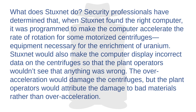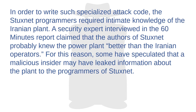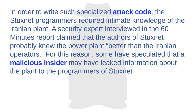Security professionals determined that when Stuxnet found the right computer, it was programmed to make the computer accelerate the rate of rotation for motorized centrifuges — equipment necessary for the enrichment of uranium. Stuxnet would also make the computer display incorrect data on the centrifuges so that plant operators wouldn't see that anything was wrong. The over-acceleration would damage the centrifuges, but operators would attribute the damage to bad materials rather than over-acceleration. In order to write such specialized attack code, the Stuxnet programmers required intimate knowledge of the Iranian plant — some have speculated that a malicious insider may have leaked information about the plant to the programmers.